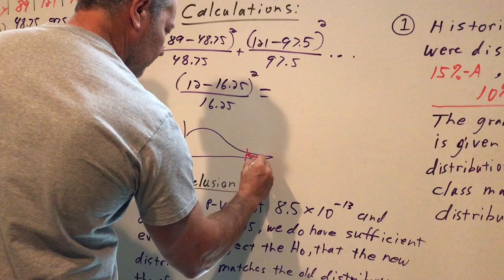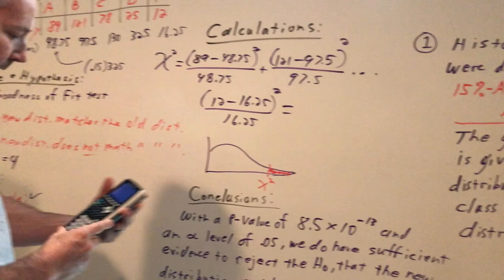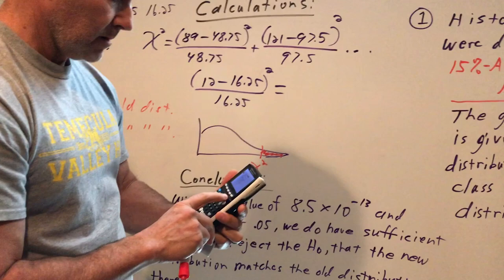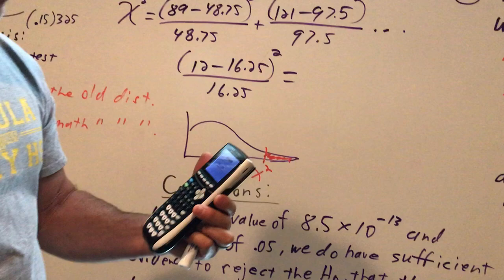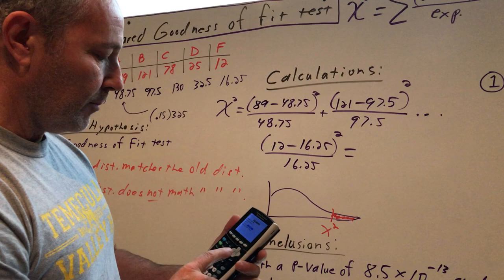All right, so I'm going to go to my calculator. I'm going to do stat, tests, and then I tab to chi-squared goodness of fit tests. Enter. Should already be set up for you. Observed is list one. Your expected values are list two as we put them in. By degrees of freedom, put four. If you don't have that there, go down to calculate.